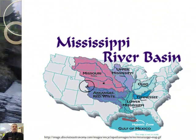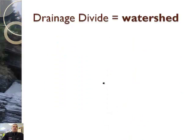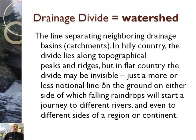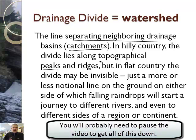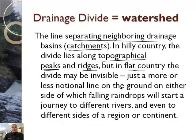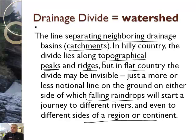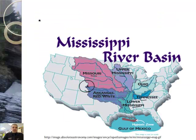This thing is called the drainage divide, which is also called a watershed. It's the line that separates neighboring drainage basins — also called catchments. In hilly country, the divide runs along a topographical peak or ridge. But in flat country, the divide may be invisible, just a notational line on the ground, on either side of which falling raindrops will start a journey to different rivers, even to different sides of a continent. The Continental Divide is a drainage divide — and so is where we live, right between the Arkansas and Missouri drainage basins.